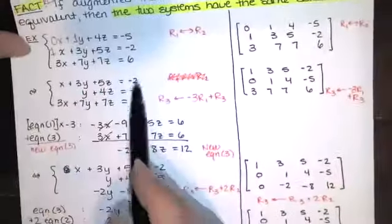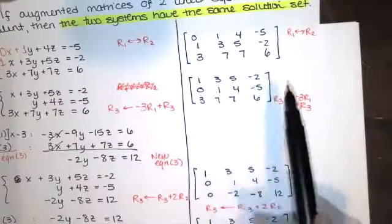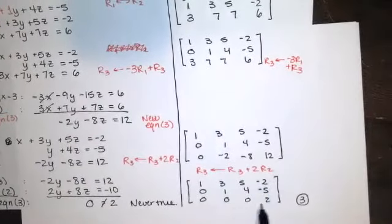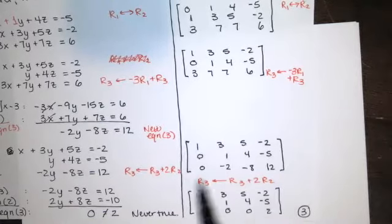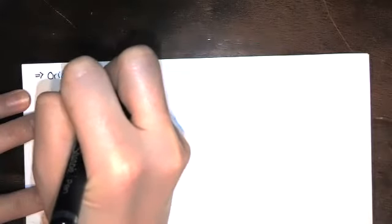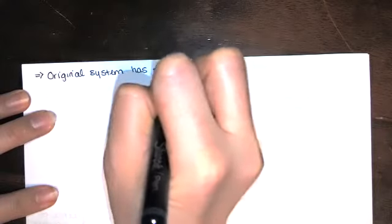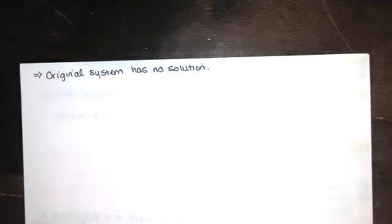So this system of equations is equivalent to the others we derived, and all of them have no solution. The solution implied by the final augmented matrix — with a row [0, 0, 0 | 2] — is the same as for the original system: no solution. If you're wondering how you can tell in general whether a system has a solution, we'll talk about that in the next video.